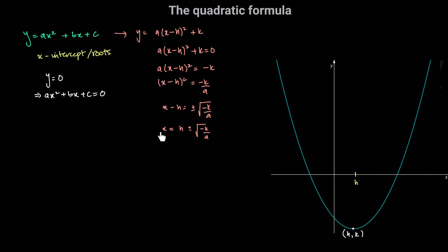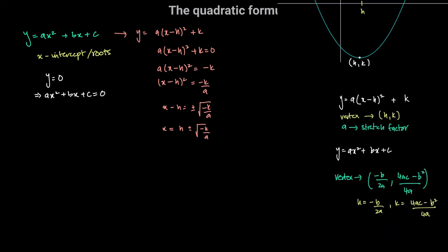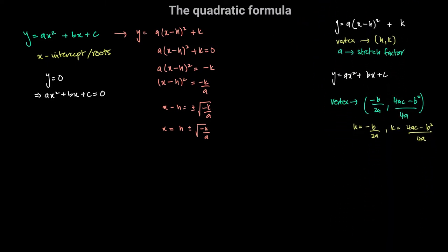But my objective is to find the values of the x-intercepts in terms of a, b, and c. We have learned previously that if we convert a quadratic expression from expanded form ax squared plus bx plus c into the completed square form a times (x minus h) squared plus k, the vertex coordinates h and k can be expressed in terms of a, b, and c. Specifically, h equals negative b over 2a, and k equals 4ac minus b squared divided by 4a.